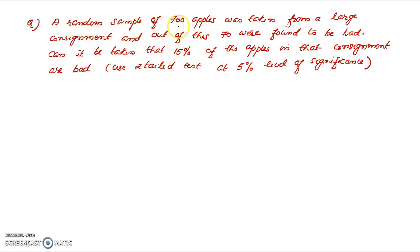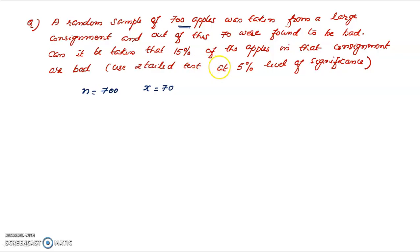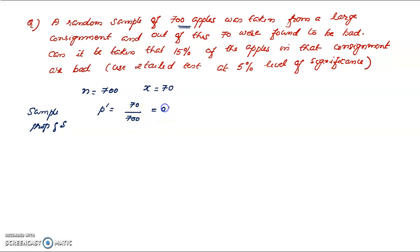A random sample of 700 apples was taken from a large consignment, and out of these, 70 were found to be bad. So n equals 700, and 70 apples were bad. We must test whether 15% of the apples in the consignment are bad. The sample proportion p-dash equals 70/700 equal to 0.1.